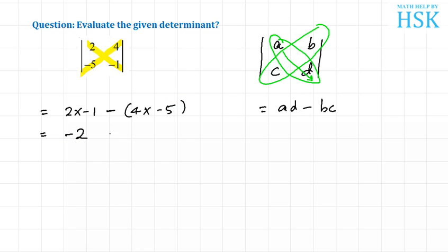-2 minus -20, which becomes -2 plus 20, because here we had obtained -20 and minus minus becomes plus. This will be equal to 18, so this is my required answer.